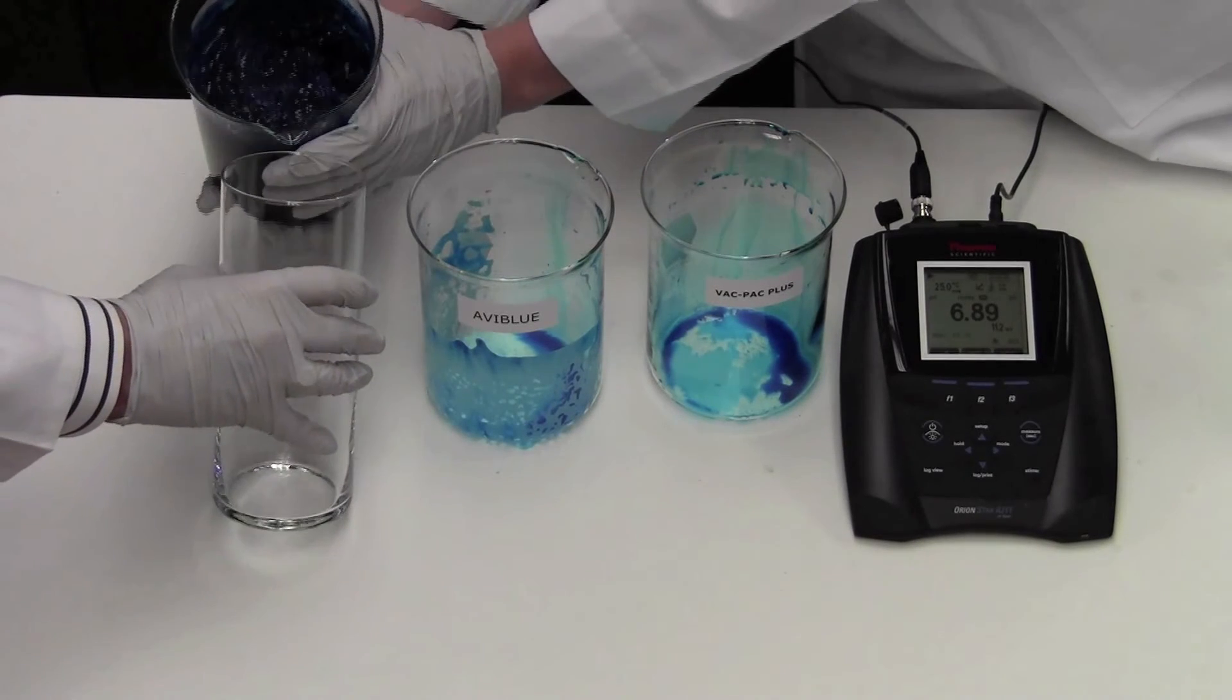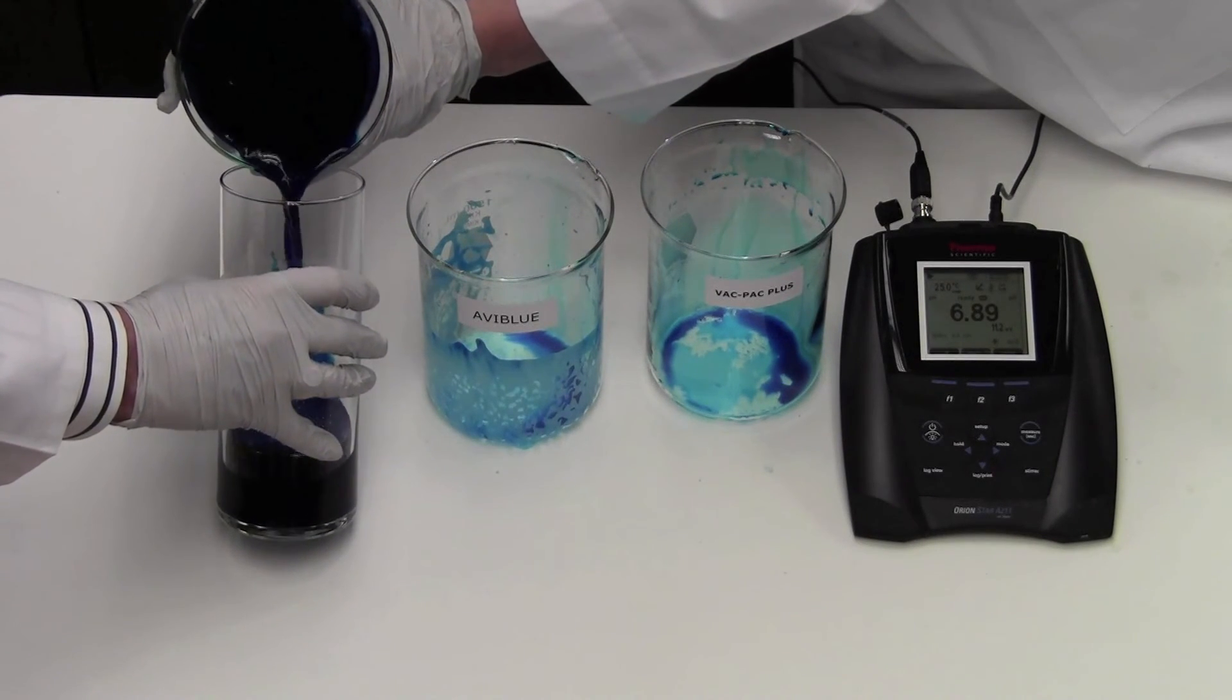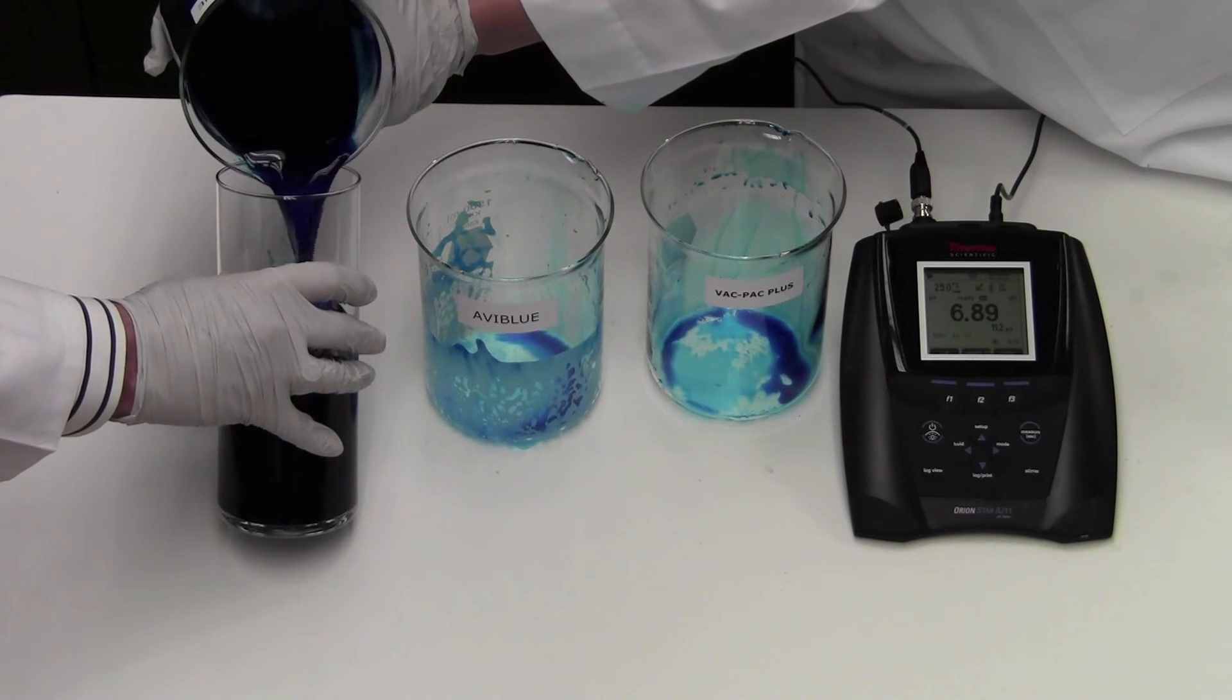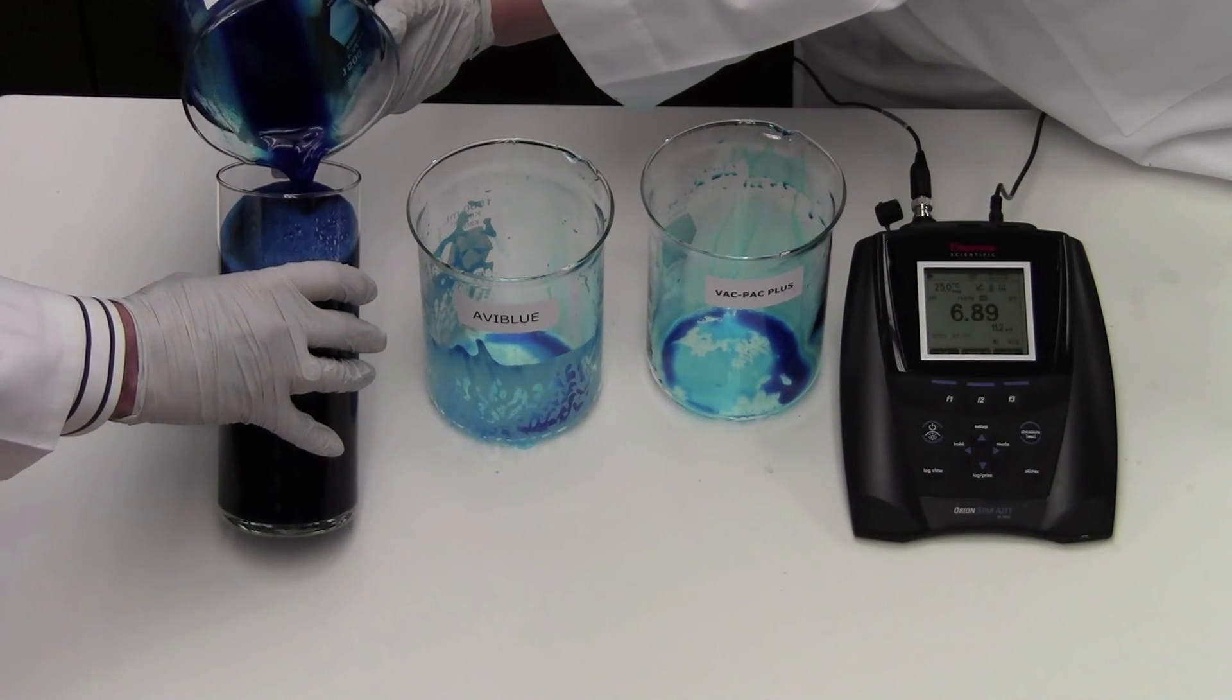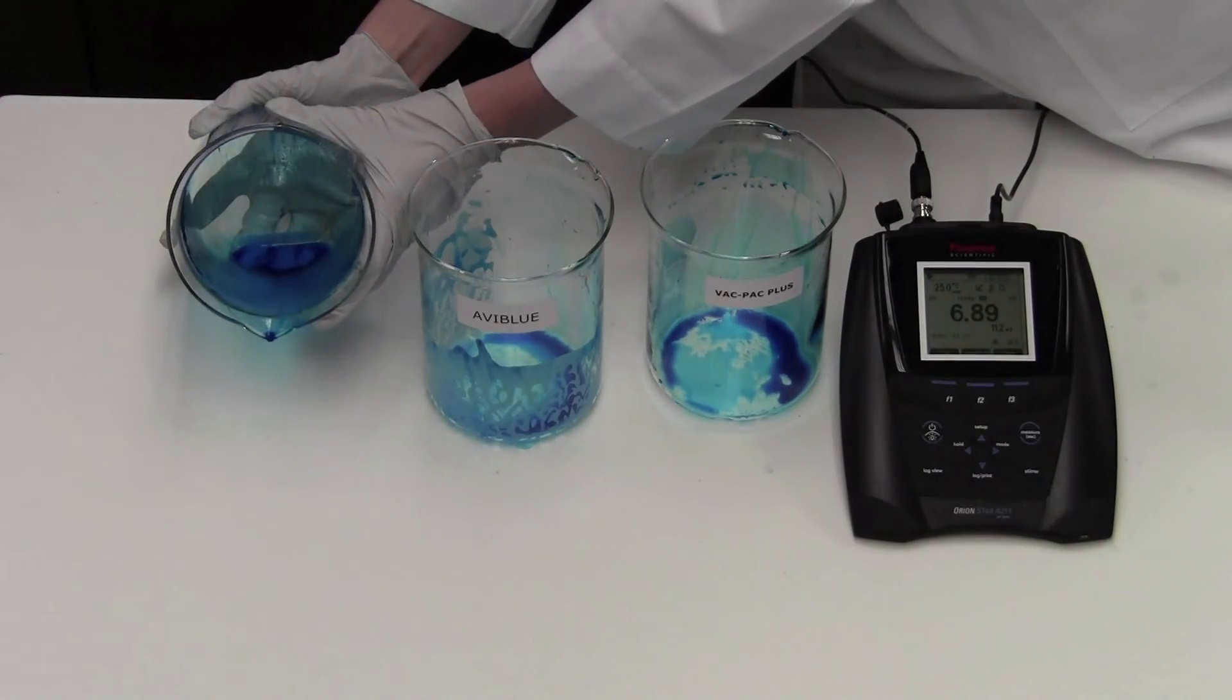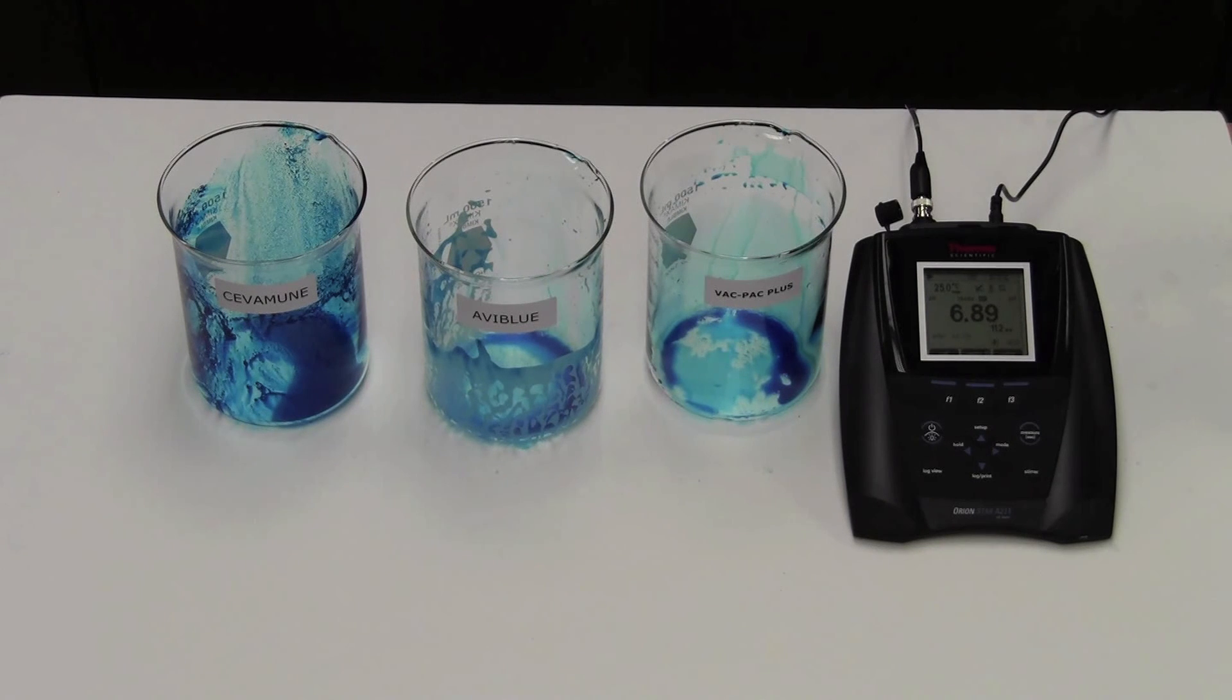Now we pour out the Sivamune solution. Notice it has much more floating residue on top. Worse yet, you'll also see a dense binder residue on the bottom of the beaker. That residue is left over from the binders used to hold the large tablets together. That left behind material does not contribute to effective vaccine stabilization. Instead, it poses a risk to plugging your water system and perhaps even trapping the vaccine.